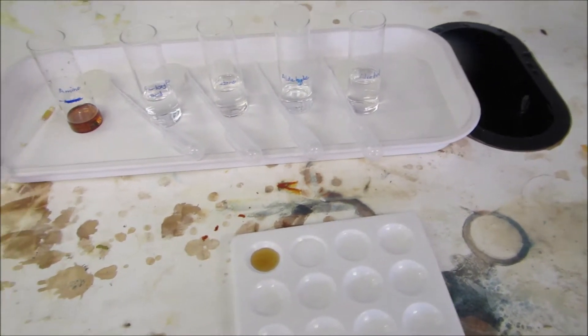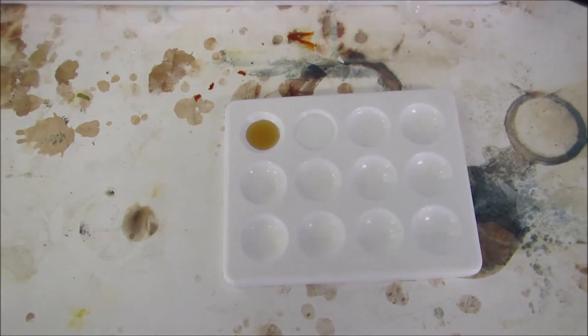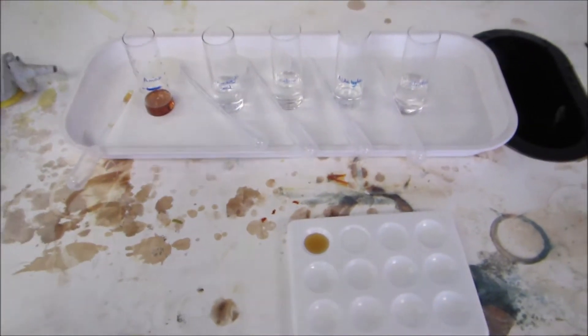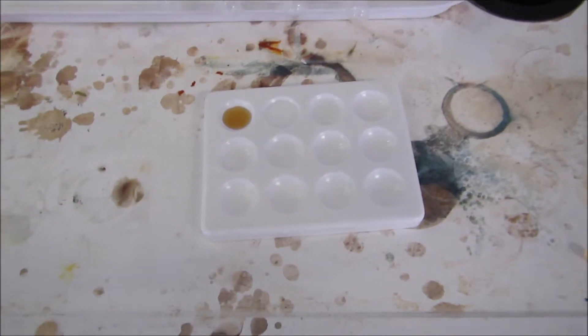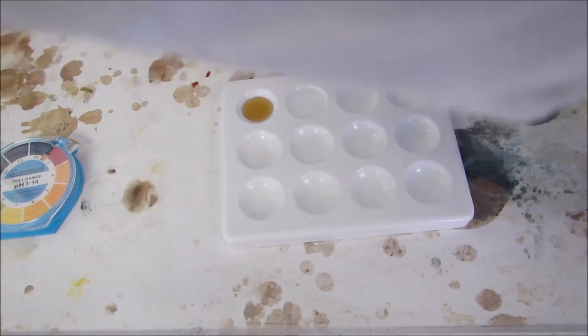Using some basic testing, the first thing I've done is I've taken a spotting tile and added five drops of each of the groups. I'm going to work out what the pH is because this can be used to identify.